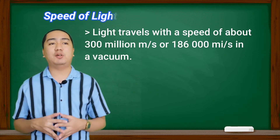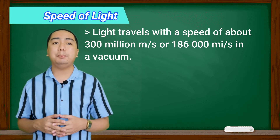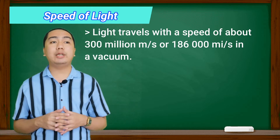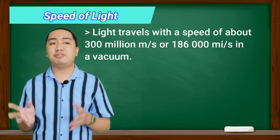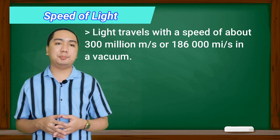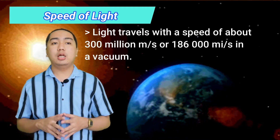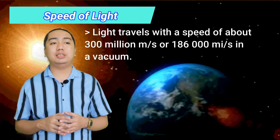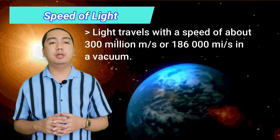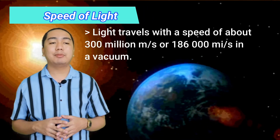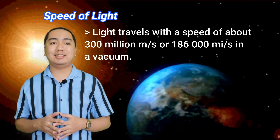Now let's proceed to the speed of light. Light travels at a speed of about 300 million meters per second, or about 186,000 miles per second in a vacuum. At this amazing speed, light from the sun takes only 8 minutes to travel to Earth. Nothing travels faster than the speed of light. When light passes through a medium, it travels more slowly — the speed of light varies depending on the medium through which it passes.